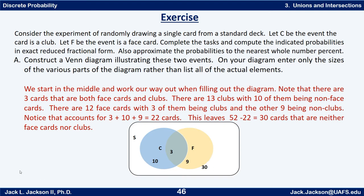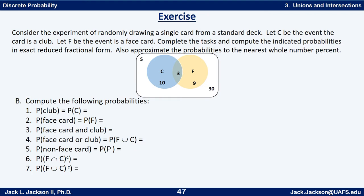Using this Venn diagram, we should be able to answer several different probability questions. Here's our Venn diagram again. See if you can compute these probabilities exactly in reduced fraction form and then approximately rounded to the nearest whole number percent — the probability of club, the probability of face card, and so forth. Notice there are some complements here as well. Press pause and work this out now.